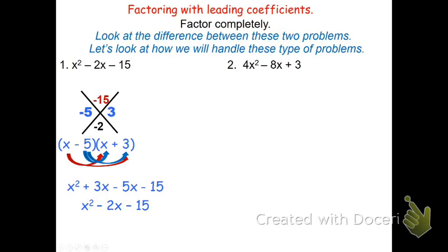The second example is a little bit more difficult. In this example, I don't have a 1x squared, and I don't have the ability to make it a 1x squared without getting fractions. So instead, I'm going to use a diamond problem and box approach.